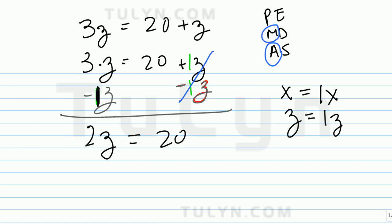So 2z equals 20. Now you know that whenever you have a constant and a variable next to each other, that's a coefficient of 2. So 2 is multiplying z. So undo multiplication. It's division. Divide by the number 2.